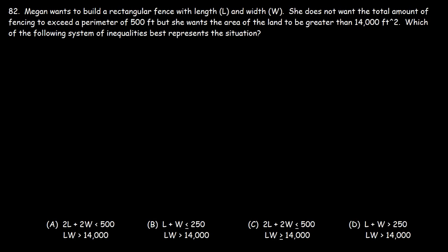Problem 82: Megan wants to build a rectangular fence with length L and width W. She does not want the total amount of fencing to exceed a perimeter of 500 feet, but she wants the area of the land to be greater than 14,000 square feet. Which of the following system of inequalities best represents the situation? We have two things we're talking about: perimeter and area.